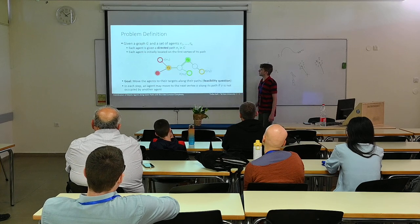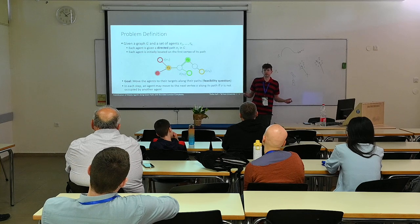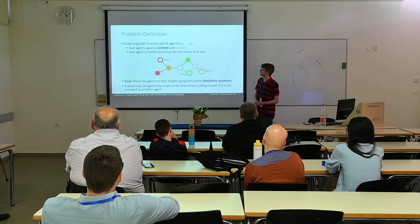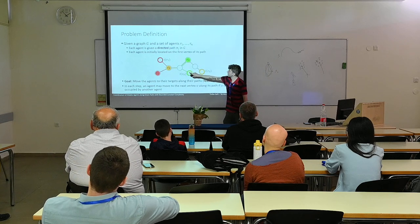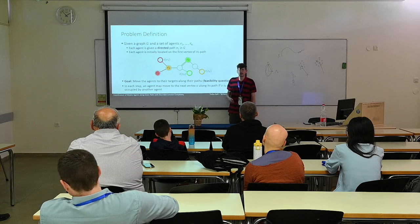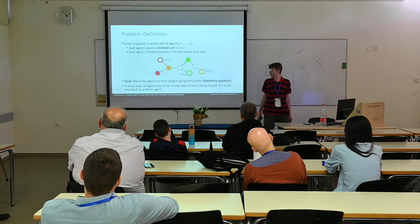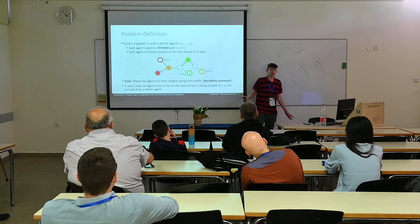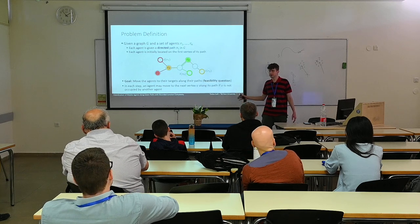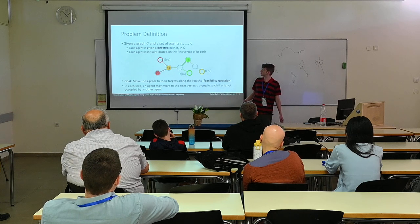This is the formal definition. We look at the discrete problem where we have a graph and a given set of agents. Each agent has a directed path in this graph — for example, R0 starts at a vertex, follows its directed path, and its target is a specified region. At each step, we move an agent to the next vertex on its path, provided the vertex is not occupied by another agent. Note that this is a feasibility question — I'm not interested in optimizing anything. This might seem easy, but as we'll see, this is not the case.